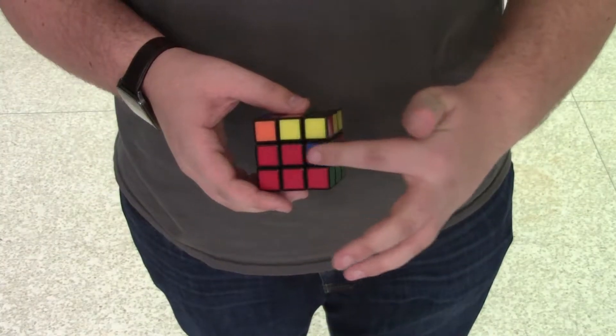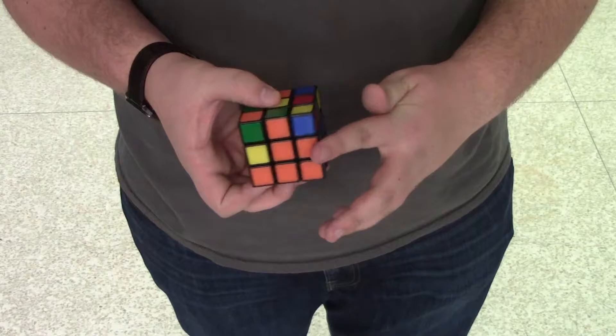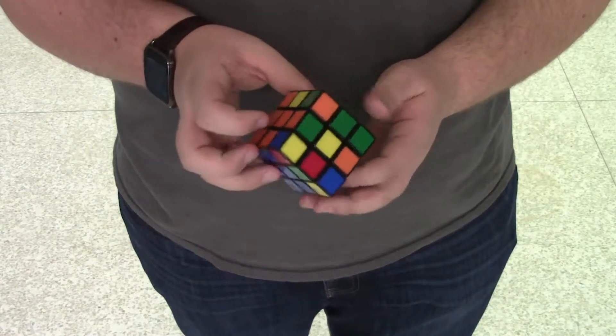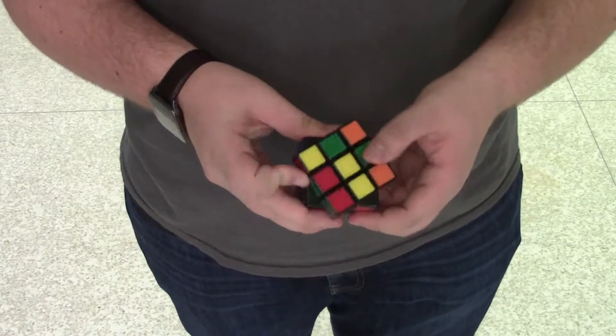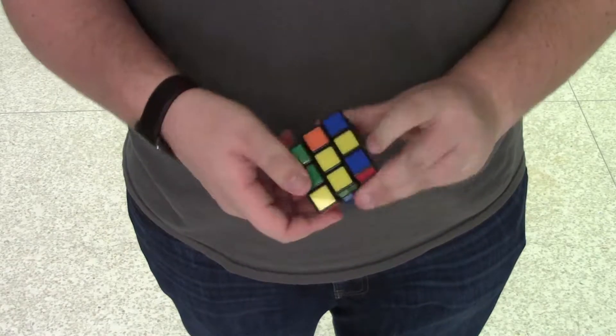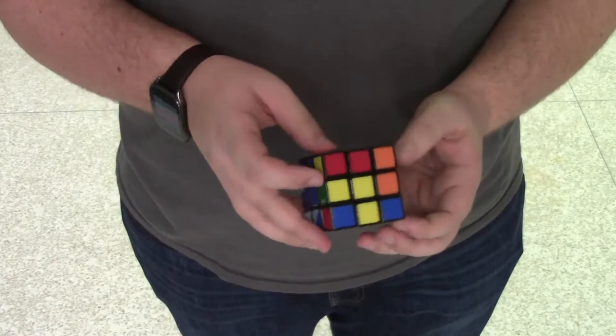Okay, so the third step in solving a Rubik's Cube is to solve the second layer. There are two separate patterns to do this: one of them to solve the one on the right, and one to solve the part on the left from what's facing you.